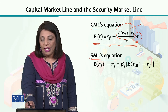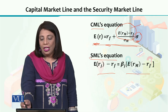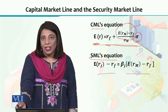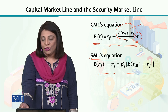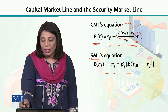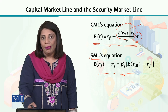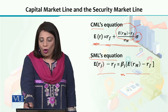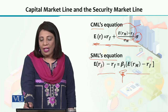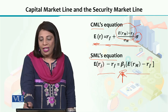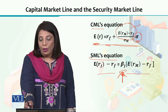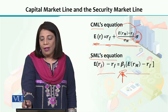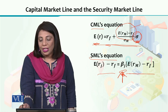The security market line is derived using the capital asset pricing model (CAPM). A key difference is that the security market line passes through the origin — there is no intercept term. Beta is the risk indicator used in the security market line, whereas sigma (standard deviation) is the risk measure used in the capital market line.